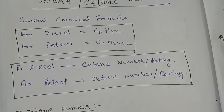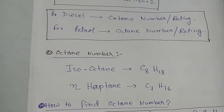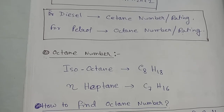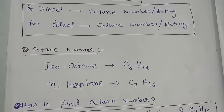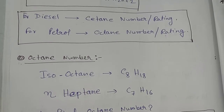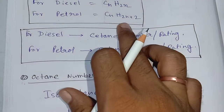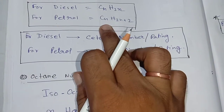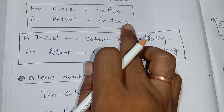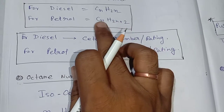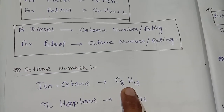Octane number represents the percentage by volume of isooctane present in fuel. Isooctane is C8H18. Using the general formula CNH2N+2, when N equals 8, we get C8H(2×8+2) = C8H18. Isooctane is a very good fuel with very high calorific value.